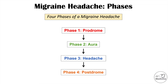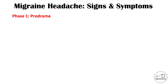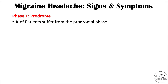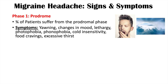In phase one, the prodrome, three-quarters of patients suffer from this phase — so not all patients will experience it, but a majority will. Symptoms of the prodrome include yawning, changes in mood, lethargy, photophobia (sensitivity to light), phonophobia (sensitivity to sound), cold sensitivity, certain food cravings, and excessive thirst.